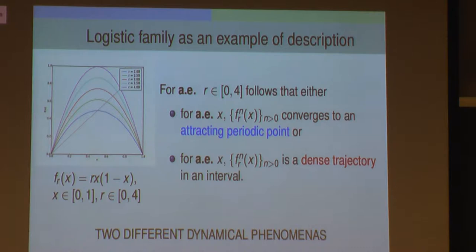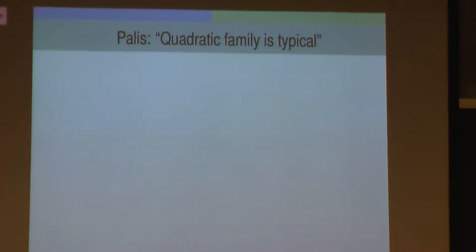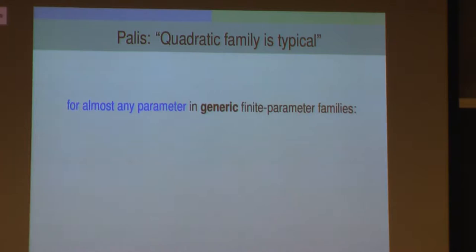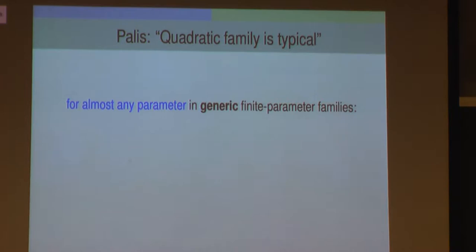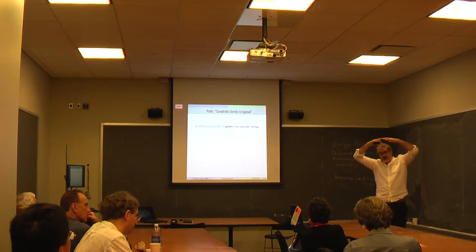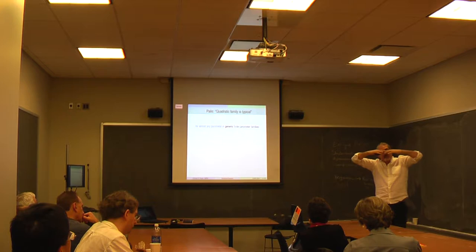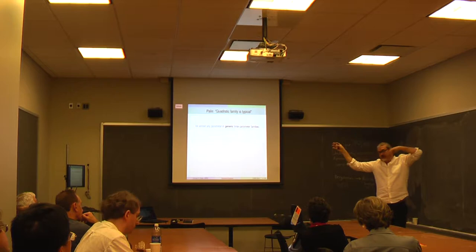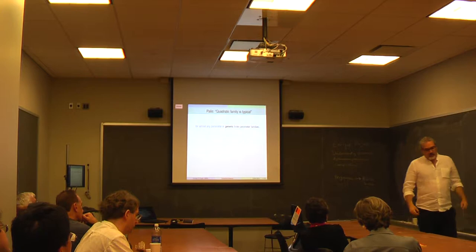This is a parametric version—for almost every parameter. If you look from a topological point of view, what is prevalent is the first one, because there is an open and dense set of parameters where there is only one attracting periodic trajectory and almost every point goes there. The rest may be a Cantor set. This is extremely ambitious, and people are extremely far from proving something similar for two-dimensional dynamics.